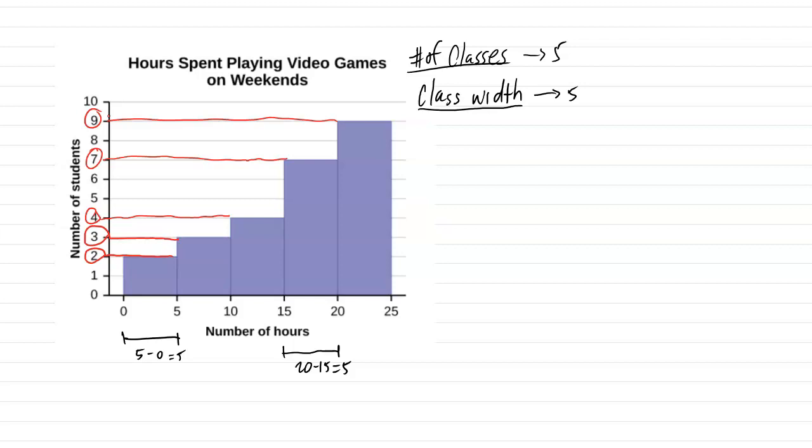If you go back and look at the stem and leaf plot, you can see every single data value directly from the graph. With a histogram, you don't know every single data value, but you know how many data values are in each interval. So you don't know the exact values, but you know how many fall in each specific interval — there are drawbacks, but a histogram is also very useful for certain types of data.